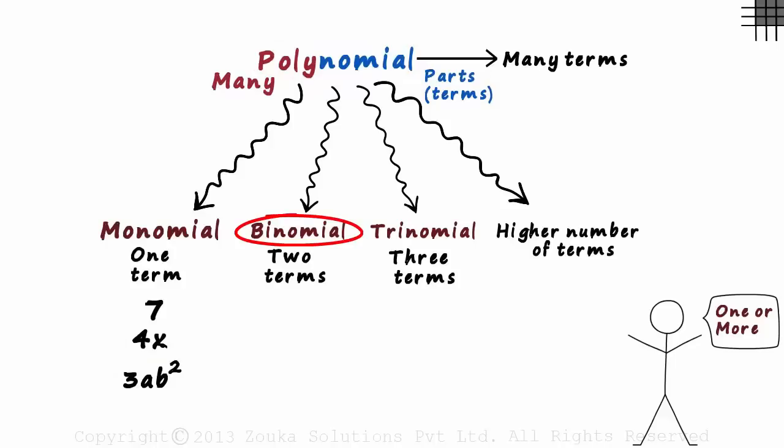An example of a binomial would be 4 plus x. The plus sign separates the terms. Another example would be 3xy minus x.